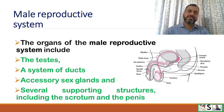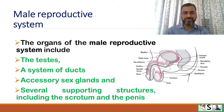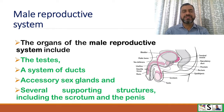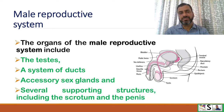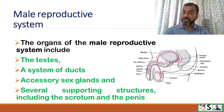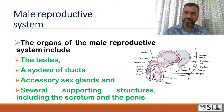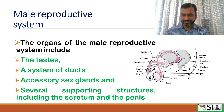The organs of the male reproductive system include the testes, a system of ducts, accessory sex glands, and several supporting structures including the scrotum and penis. Now we will discuss these organs one by one.